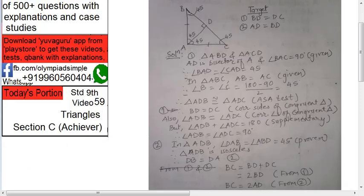See these two triangles are congruent ABD and ACD by ASA test. Right, you can see it, I've proven it over here. So once these are congruent, what happens is, BD equals to DC, BD equals to DC, corresponding sides of congruent triangles.